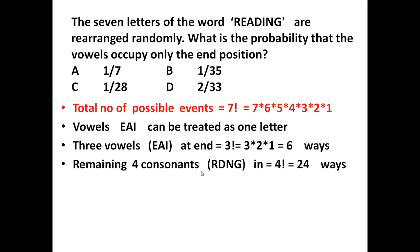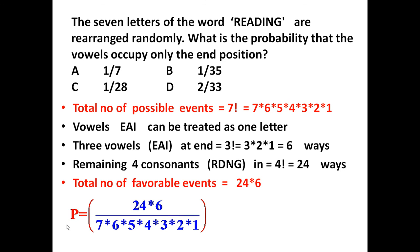The 3 vowels must be at the end and the 4 consonants must occupy the remaining positions. So the total number of favorable events is 6 into 24. Probability equals favorable events divided by total possible events: 24 into 6 divided by factorial 7. Simplifying this gives 1 upon 35. So the probability that vowels occupy the end positions is 1 upon 35.